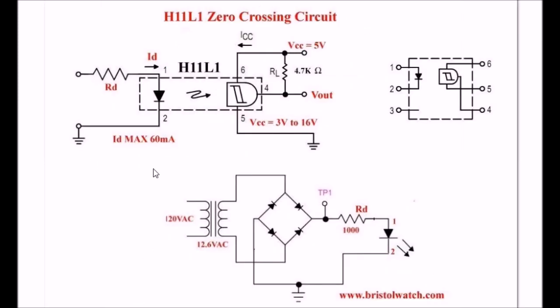This is the H11L1 optocoupler. This thing is a little different than what you expect. We have an LED input like we do any other optocoupler, but the detector circuit is a Schmitt trigger digital circuit with optical detector that will give you a clean output without having to use separate Schmitt trigger inverters or anything else.